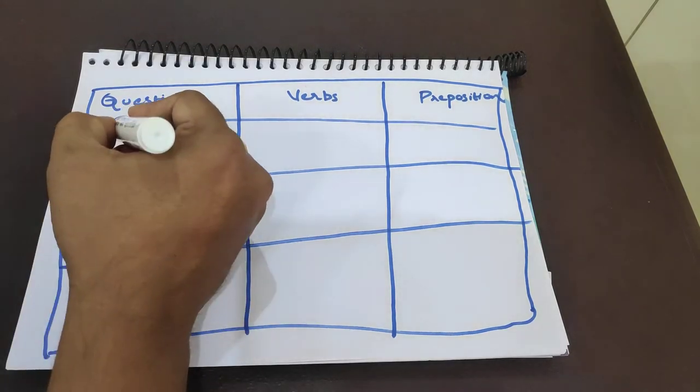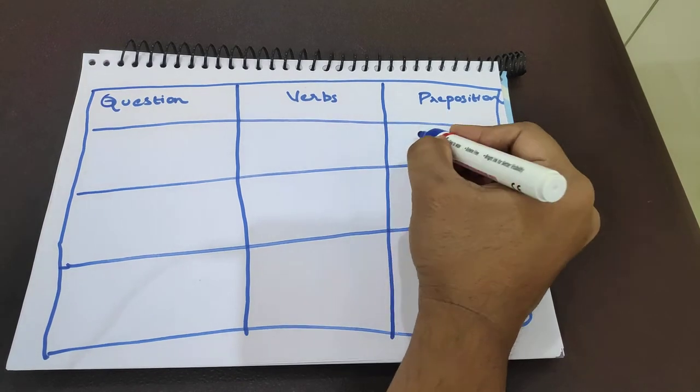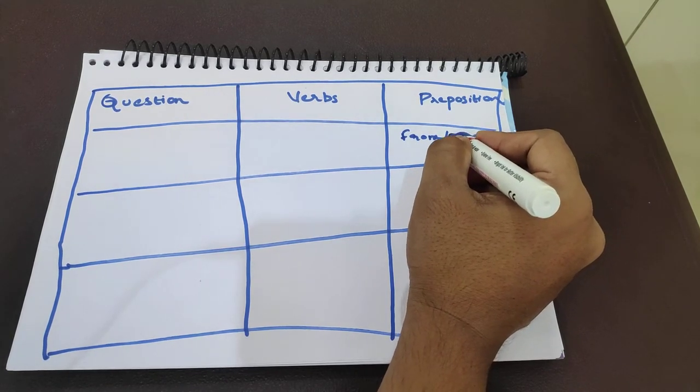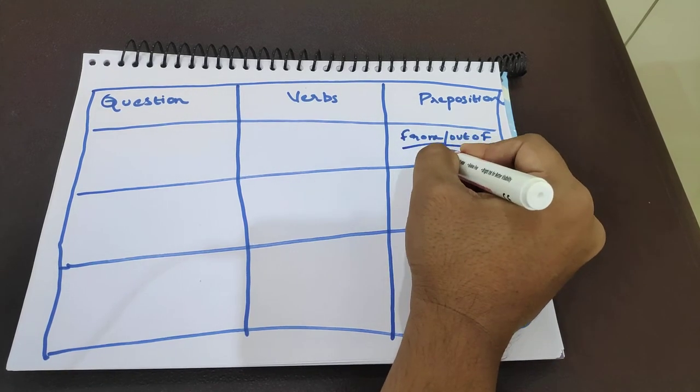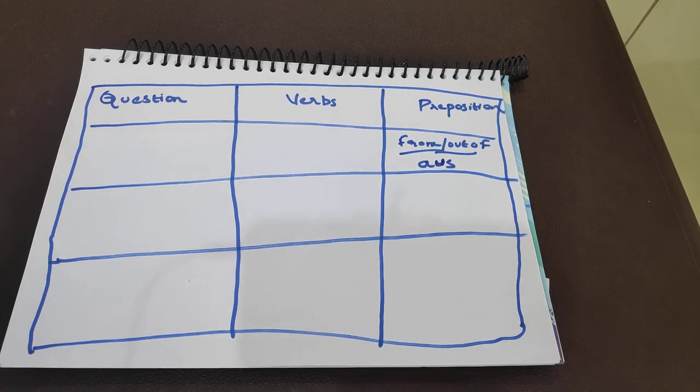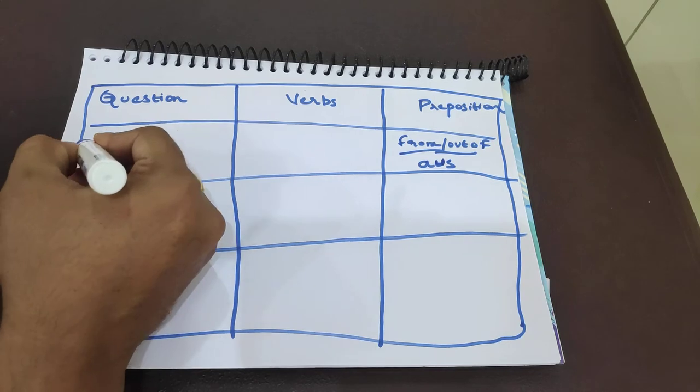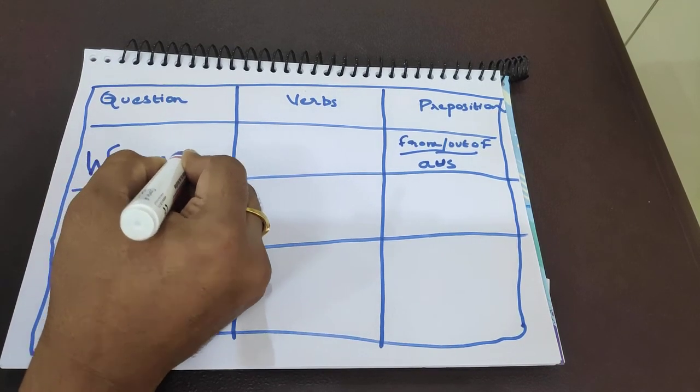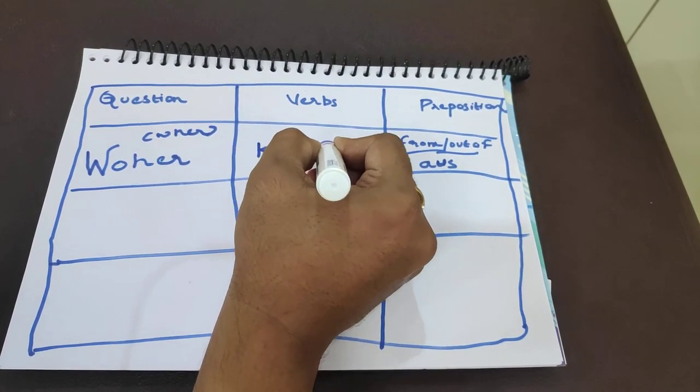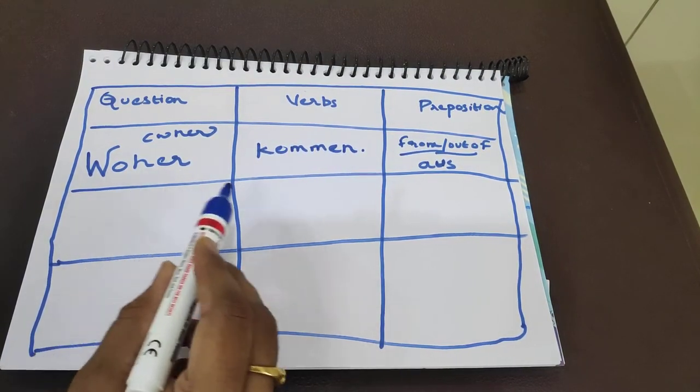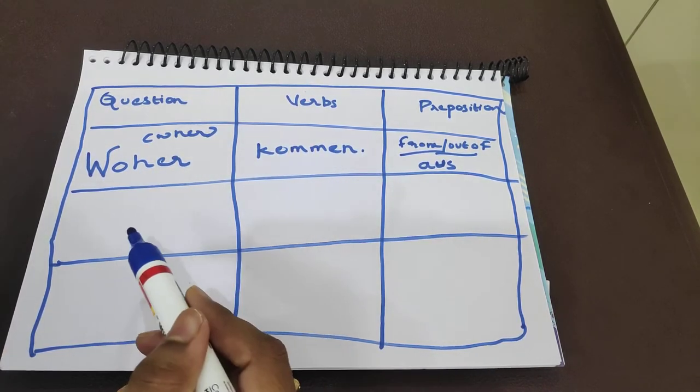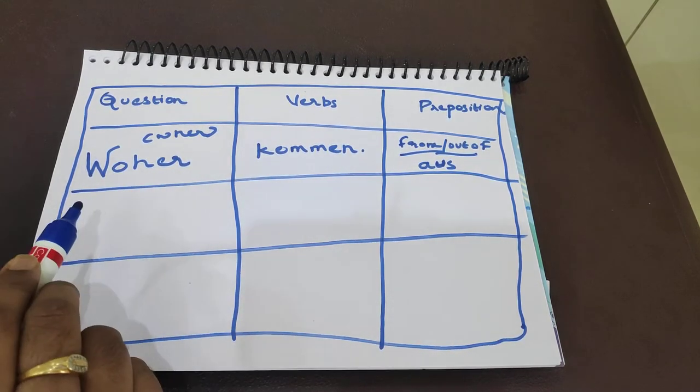First question: Woher - where. First is 'aus', which means from or out of. Where are you coming from? From Australia, for example - aus Australia. So the question would be Woher kommen. Where are you coming from? Woher kommst du? Where are you coming from?